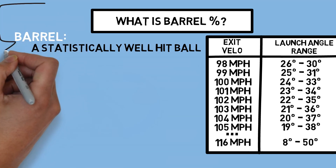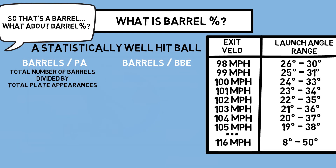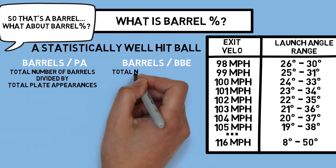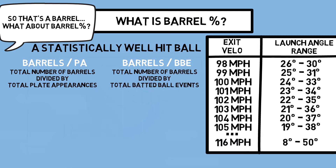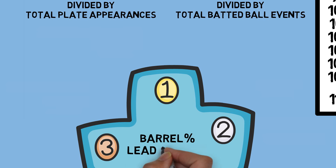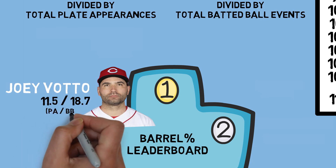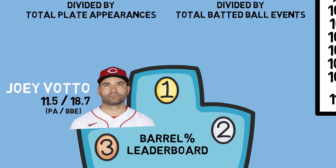Now that we've defined what a barrel is, barrel percentage is calculated two ways on Baseball Savant: Barrels Per Plate Appearance and Barrels Per Batted Ball Event. These are the total number of barrels divided by total plate appearances or total batted ball events respectively. For context, here are the top three in the MLB. In third, Joey Votto has an 11.5% Barrel Per Plate Appearance, meaning just over one out of every ten at-bats results in a barrel, and an 18.7% Barrel Per Batted Ball Event, meaning nearly two out of every ten balls he puts in play are a barrel.